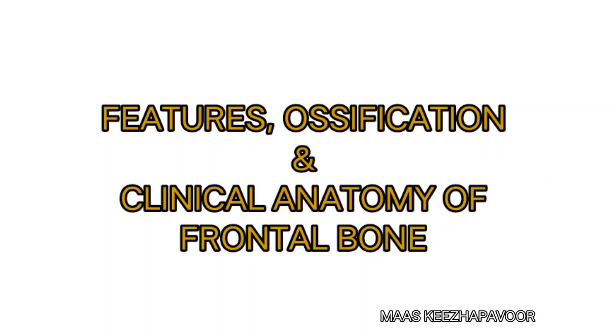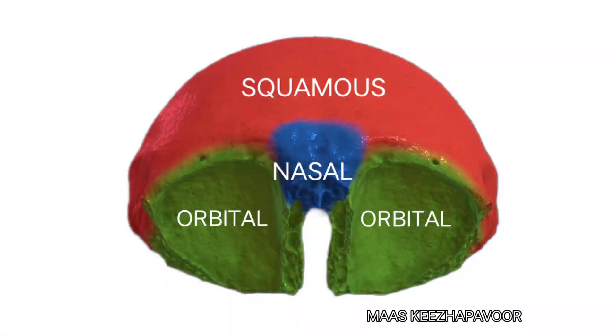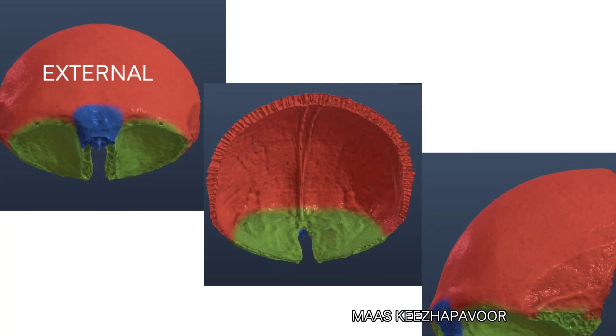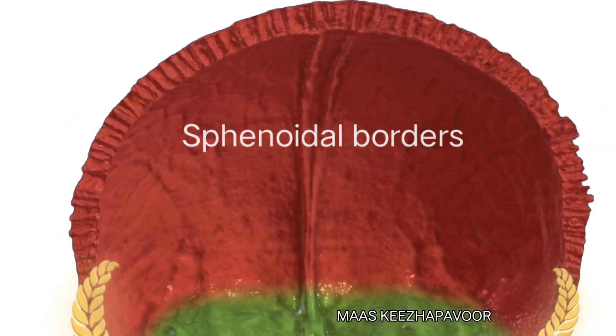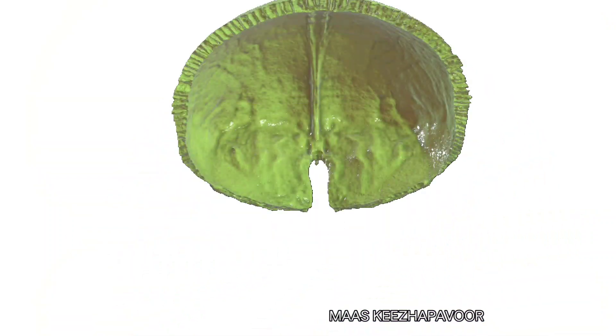Ossification and clinical anatomy of frontal bone. The parts of frontal bone are squamous part, nasal part, orbital plates, and zygomatic processes. The squamous part has four surfaces: external surface, internal surface, and two temporal surfaces.